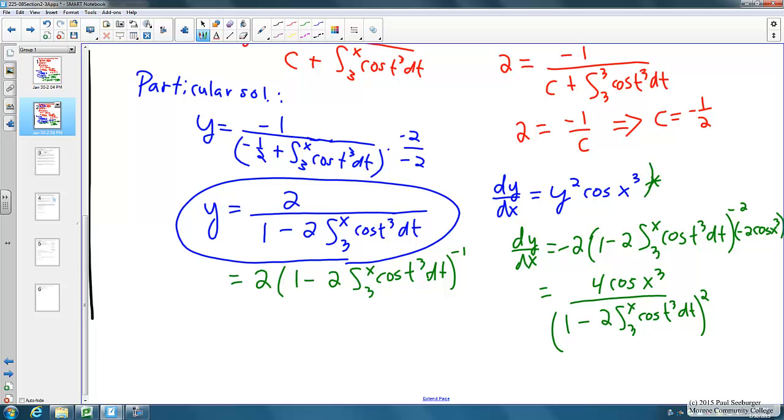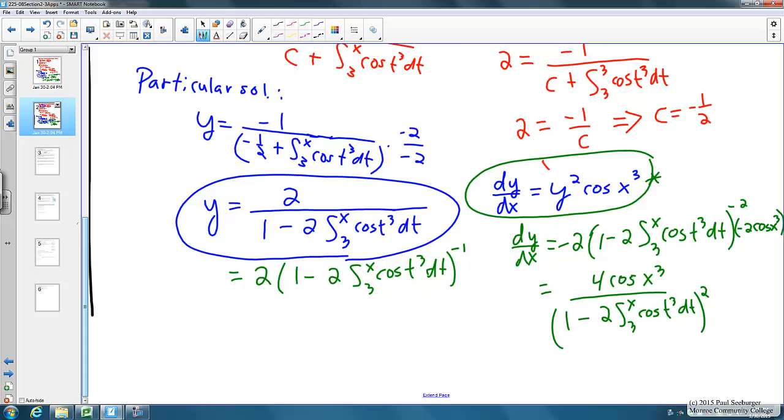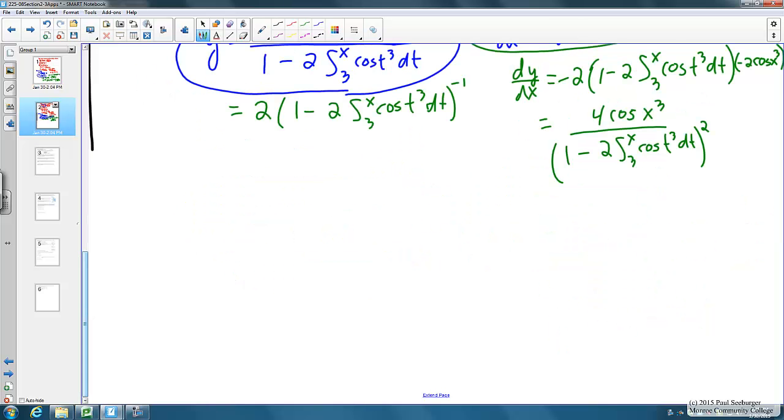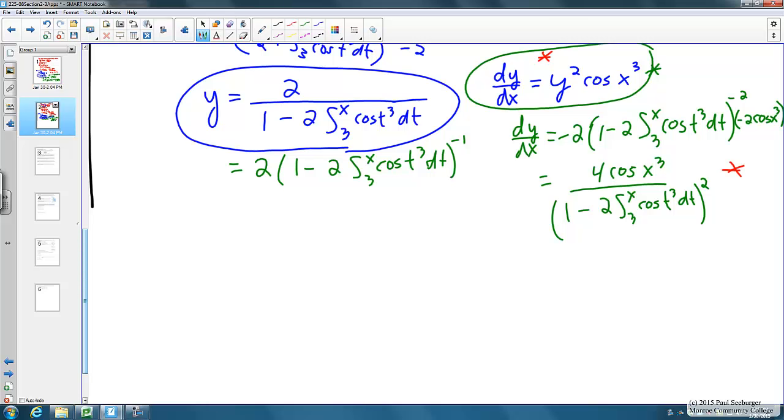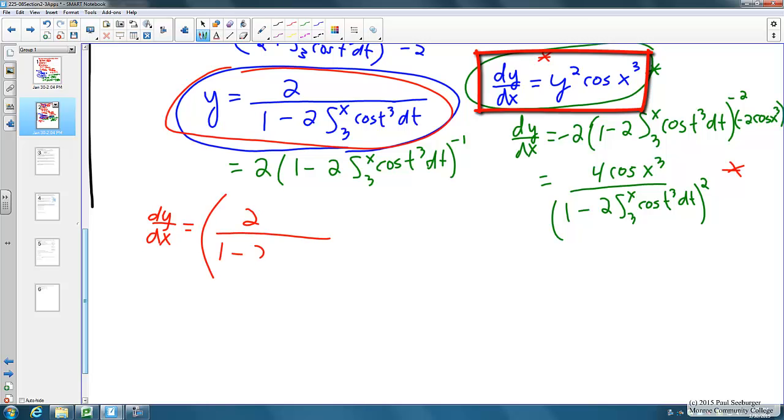To do that, in this case I think it's probably easiest to start with what we want it to be, this form, and see if it indeed simplifies to this form. So let's go ahead and plug in y, our y formula that's here, into our original formula there. So dy/dx we know is equal to y squared, so that's going to be 2 over 1 minus 2 times the integral from 3 to x cosine of t cubed dt squared times cosine of x cubed.